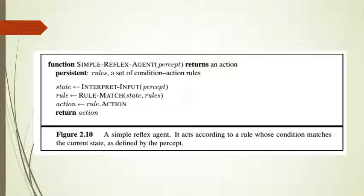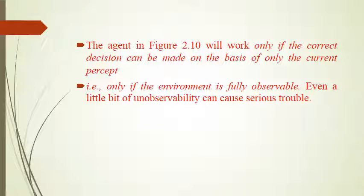A simple reflex agent acts according to a rule whose condition matches the current state as defined by the percept. When conditions are matched, the actions are performed. The agent works only if the correct decision can be made on the basis of only the current percept — meaning only if the environment is fully observable. Even a little un-observability will cause serious trouble.